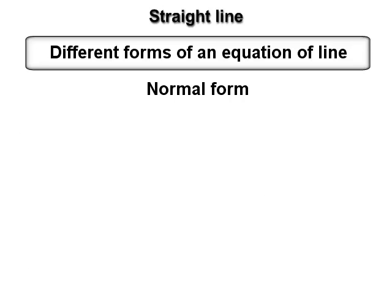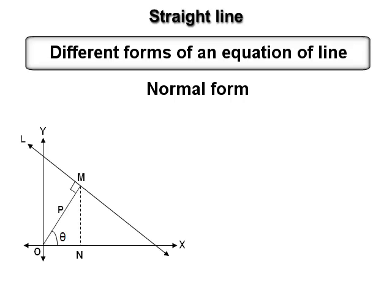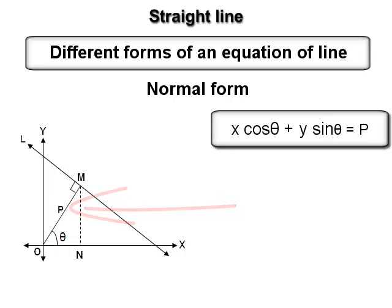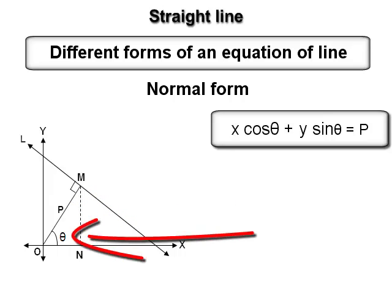Form 5 — Normal form: the equation of a line in normal form is x cos θ + y sin θ = p, where p is the length of the perpendicular drawn from the origin to the line. Note that here θ is not the inclination of the line, but rather the angle made by the perpendicular with the positive direction of the x-axis.